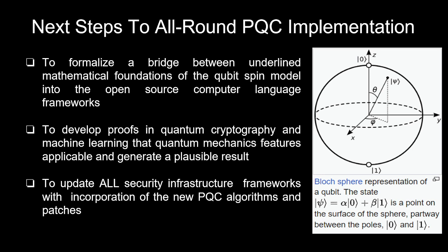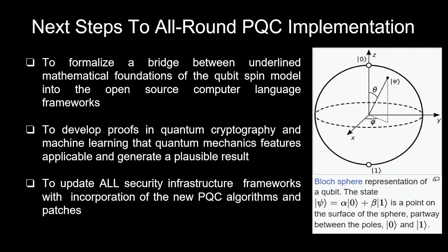Next steps to all-around post-quantum cryptography implementation: to formalize the bridge between the underlying mathematical foundations of the qubit spin model into open-source computer language frameworks; to develop proofs in quantum cryptography and machine learning that quantum mechanics features are applicable and generate plausible results; and to update all security infrastructure frameworks with incorporation of the new post-quantum cryptography algorithms and patches. The Bloch sphere shows the spin of the qubit. Currently, I am working on a project which will translate some of these mathematical algorithms — used to represent and manipulate qubits — into open-source Python libraries to allow them to be used by anyone.